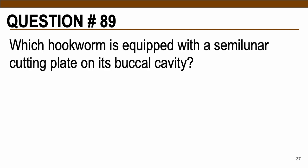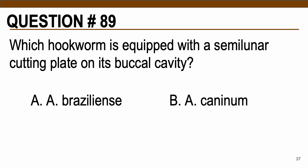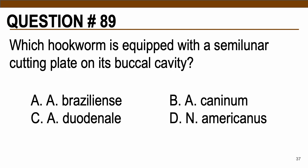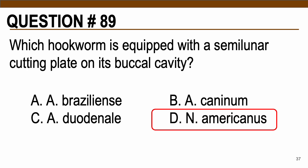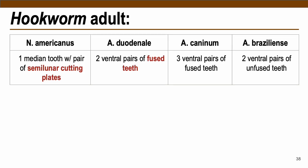Question number 89: Which hookworm is equipped with a semilunar cutting plate on its buccal cavity? Choices: A — Ancylostoma braziliense, B — Ancylostoma caninum, C — Ancylostoma duodenale, D — Necator americanus. The correct answer is letter D, Necator americanus — remember: Necator has cutting plates. For Ancylostoma duodenale, it contains ventral pairs of fused teeth. For Caninum, three ventral pairs with fused teeth. To differentiate Caninum from braziliense — both are zoonotic — Caninum has fused teeth while braziliense has unfused teeth.